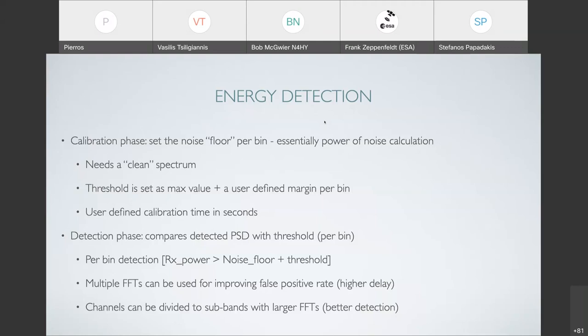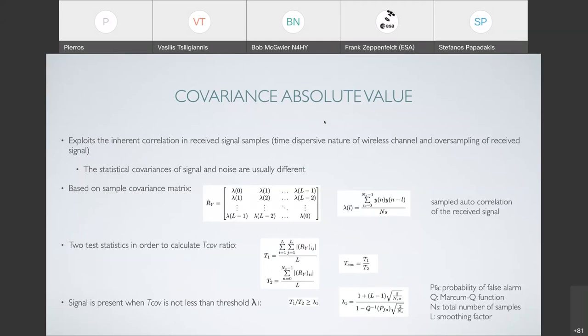In case that we use multiple FFTs, we can improve the false positive rate, but we increase the delay. We can have FFTs which are exactly as a channel width would be, but we can split it to even more subbands to be more accurate in the detection.